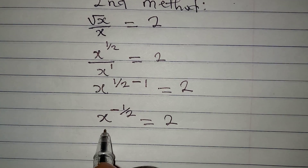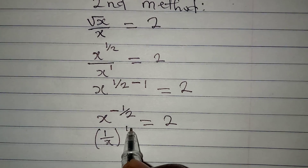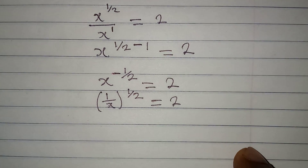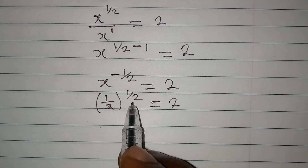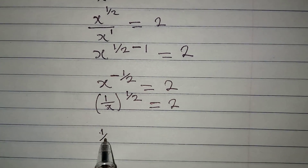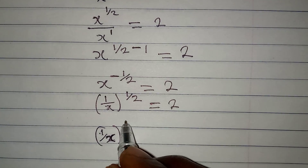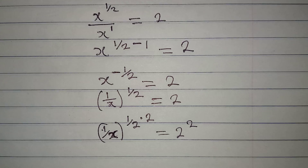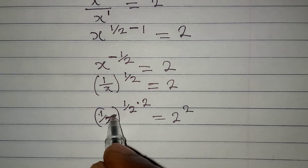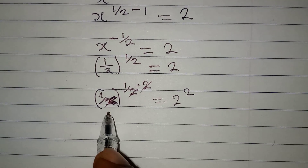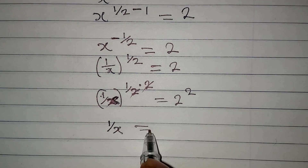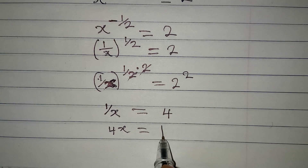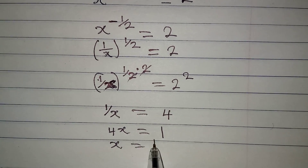Let's remove the negative from here first — that will give us 1 over x to the power of 1 over 2, equal to 2. The next step is to remove the power of 1 over 2 by squaring both sides. So 1 over x to the power of 1 over 2, raised to the power of 2, equals 2 to the power of 2. This gives 1 over x equals 4. Cross multiplying, 4x equals 1, and our x is equal to 1 over 4.